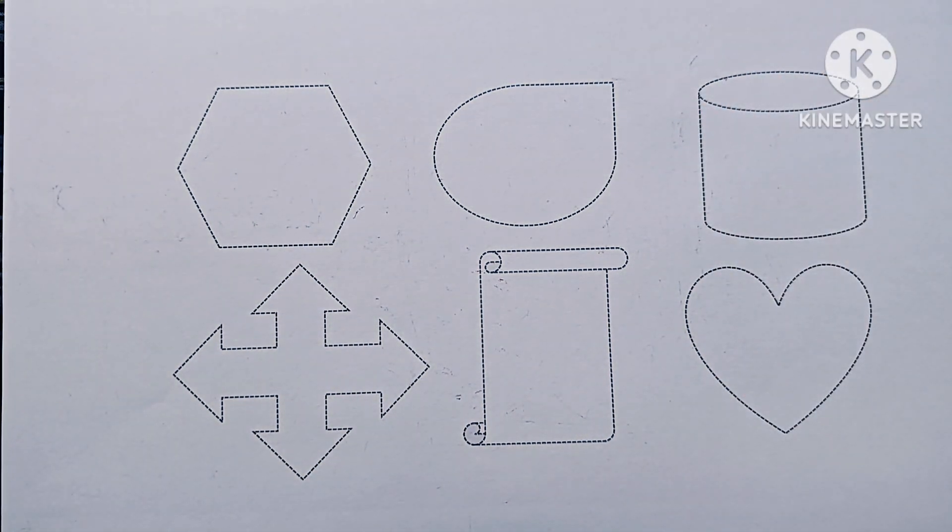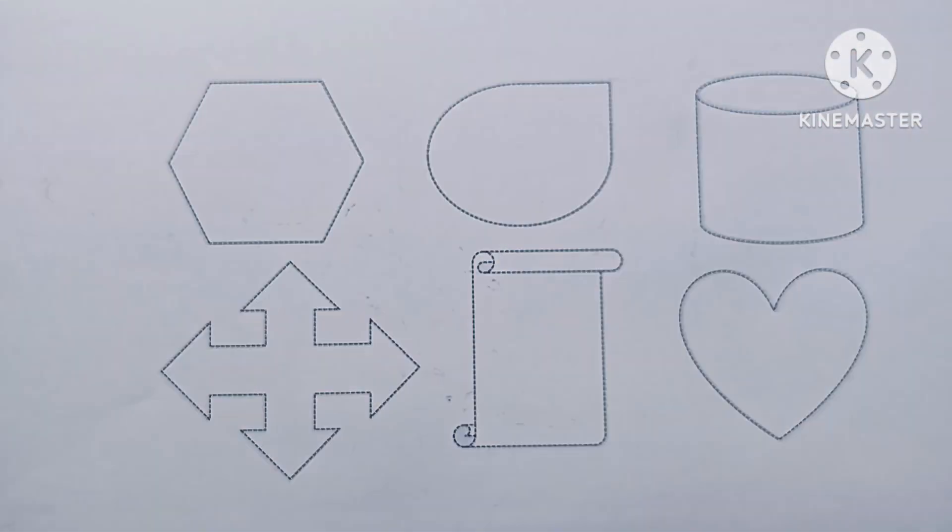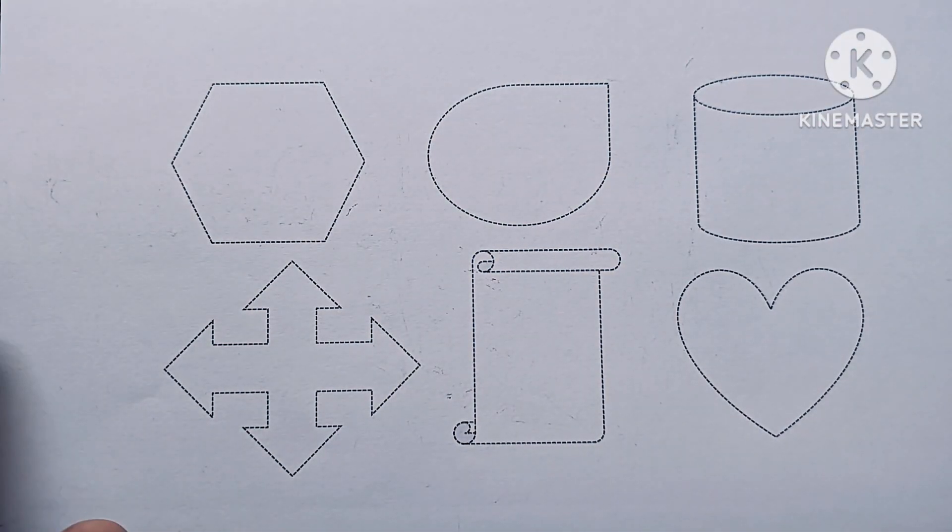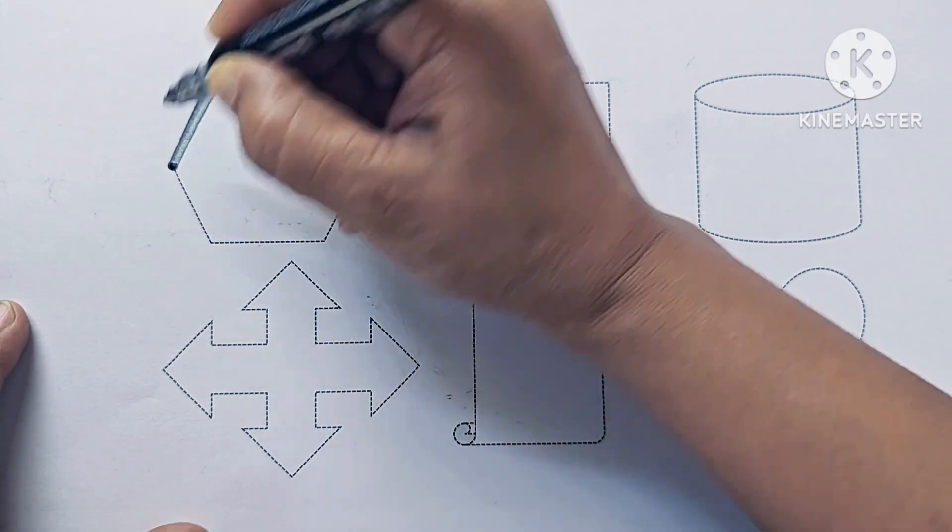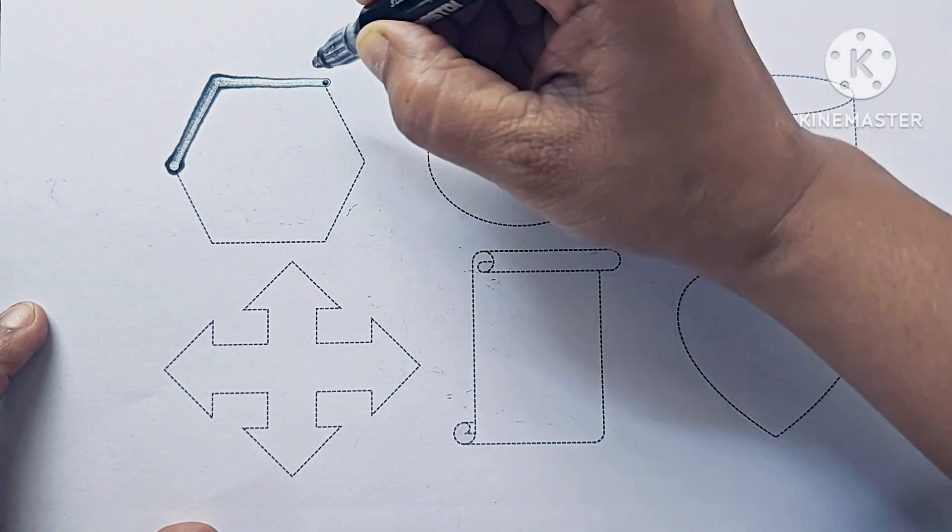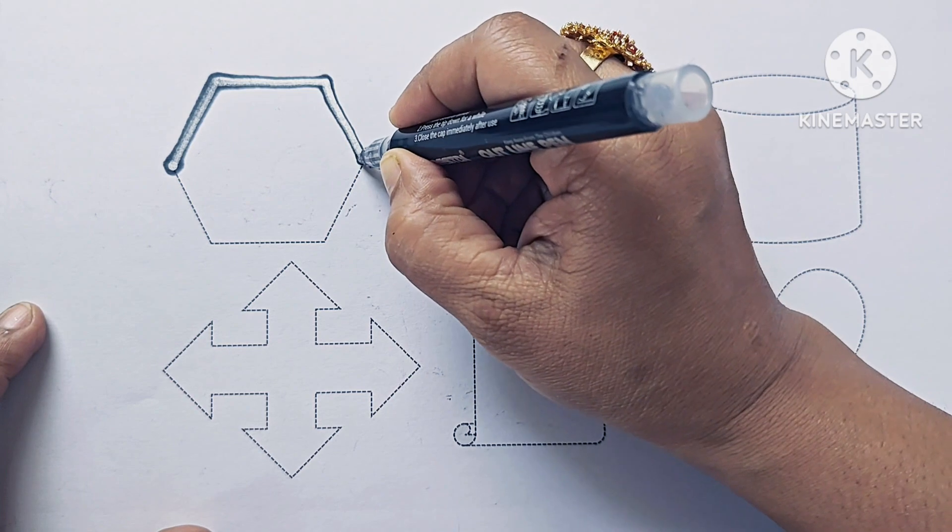Let us draw the shapes. This is hexagon. Hexagon has 6 sides.